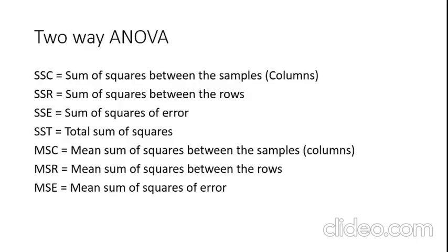In the two-way ANOVA, there are symptoms which will be used during the calculation. First of all, we are very familiar with all the terms which will be used in the two-way ANOVA. SSC is the sum of squares between the samples when we are taking the columns. SSR is the sum of the squares between the rows when we are taking the rows.